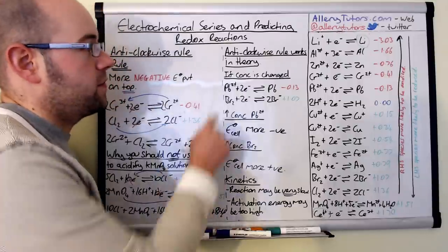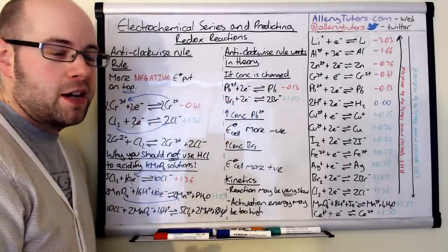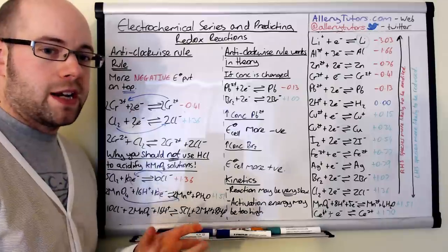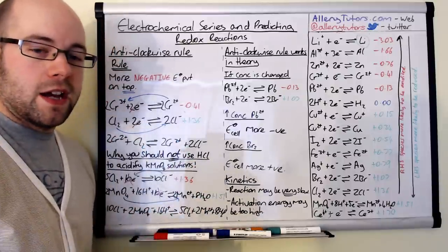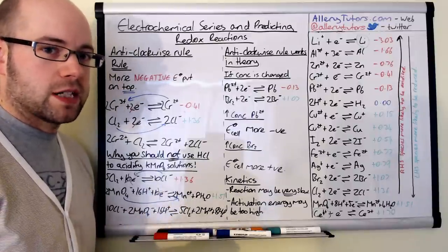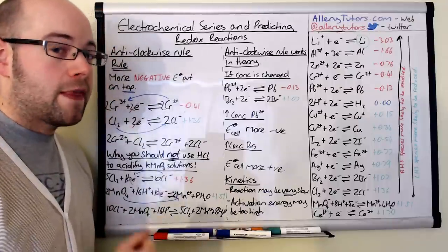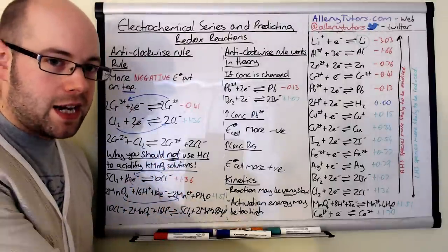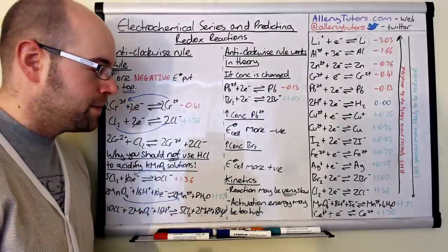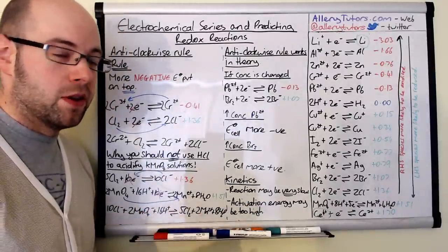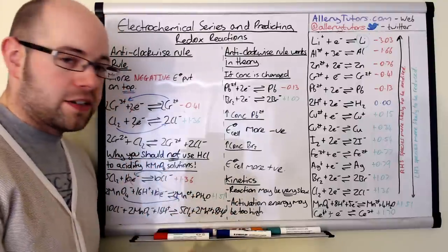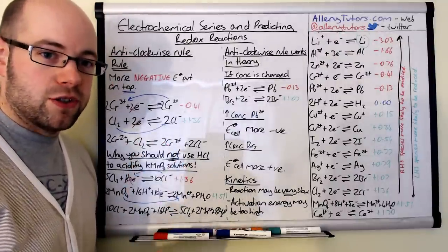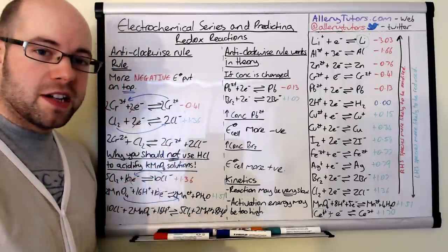Another thing that can affect predictions from the anti-clockwise rule is kinetics. The reaction may be feasible but very slow. For example, iron reacting with oxygen — the rusting process — is a feasible reaction, but you don't see it happen before your eyes because it's a very slow process. That doesn't mean the reaction isn't happening. Sometimes a reaction won't proceed at all even though it's theoretically feasible, because the activation energy is so high that at standard temperature and pressure it doesn't proceed. I hope that helps. Bye.